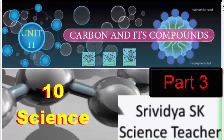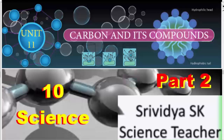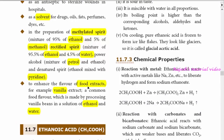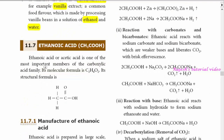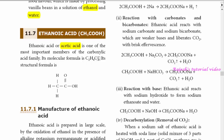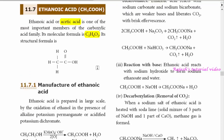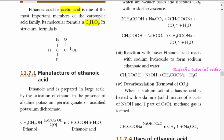Good morning children. In this part we are going to learn about two important organic compounds, namely ethanol and ethanoic acid. Ethanoic acid is commonly called acetic acid, one of the most important members of the carboxylic acid family. Its molecular formula is C2H4O2. You can look into the picture.